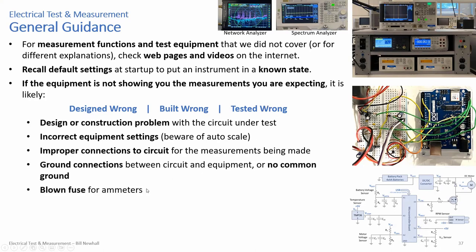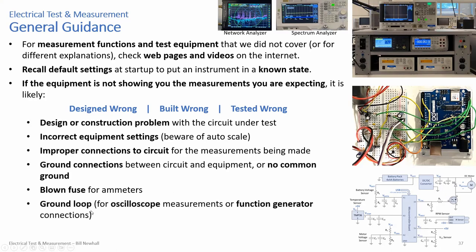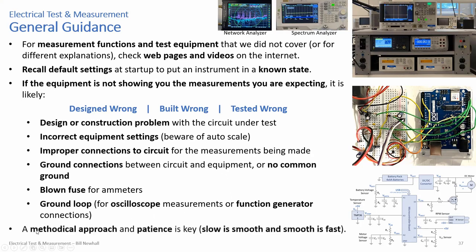Check blown fuses when your ammeter isn't reading an expected value. Check for ground loops when using the oscilloscope and function generator, since the outer conductors of the coax connected to those ports are usually AC/earth ground. Use a methodical approach — patience is key. As many people say: slow is smooth and smooth is fast.